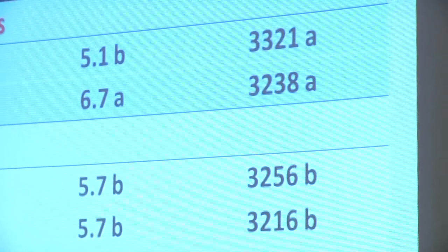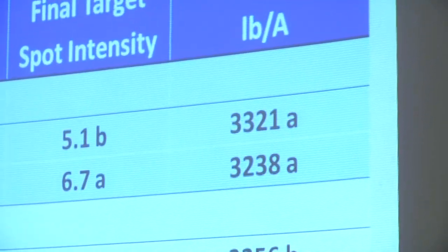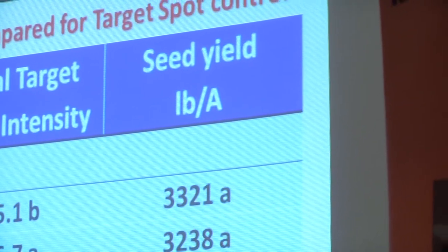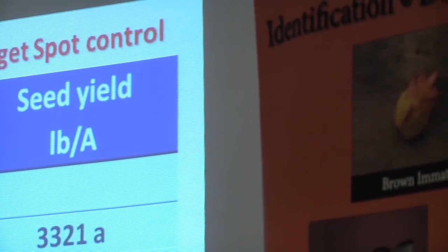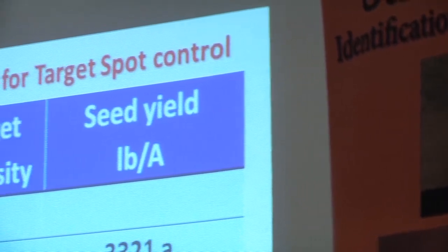There are some other chemistries coming down the line that probably have better activity against the target spot fungus, but they don't have a cotton label. In the one preventive test last year where I saw a control and yield gain from fungicide, Headline at nine fluid ounces applied twice gave about 300 pounds of seed cotton. That follows closely with results from field trials conducted in southwest Georgia — you might get a yield gain of up to 200 pounds of lint or around 500 to 600 pounds of seed cotton.